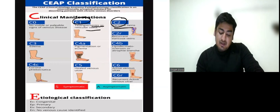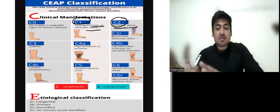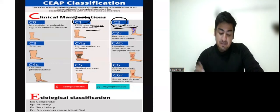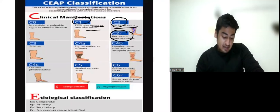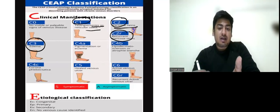C2 is varicose veins. So varicose veins are clearly visible in C2 stage. C2R is recurrent varicose veins. In C3 we have edema associated with varicose veins.